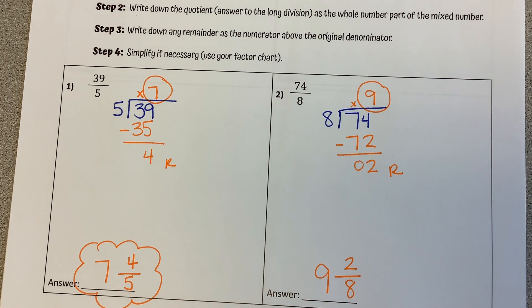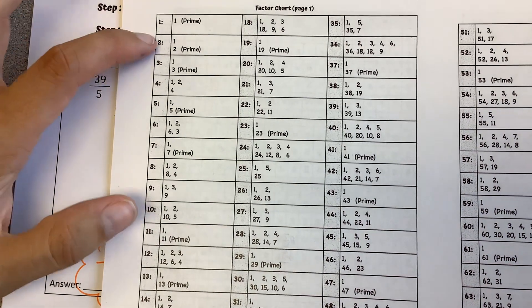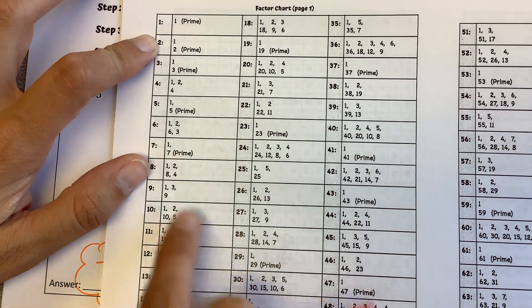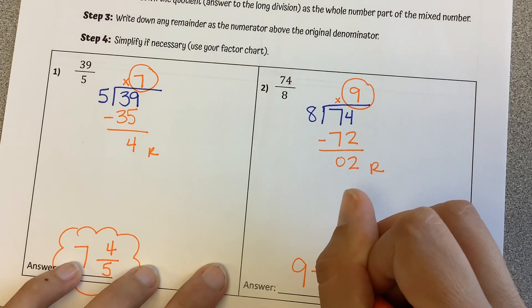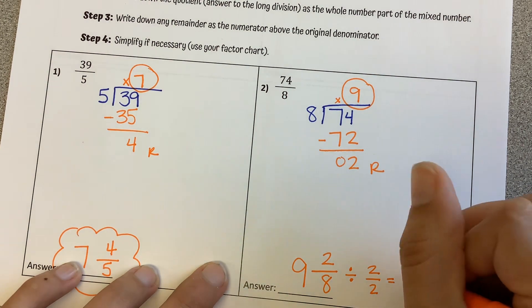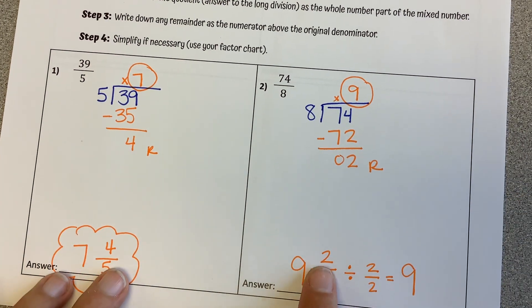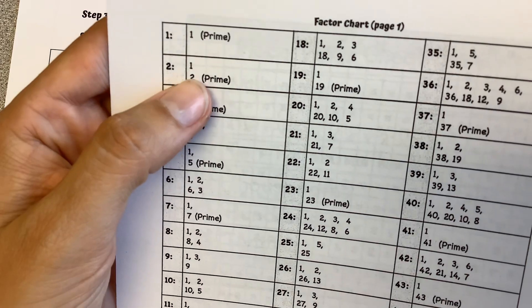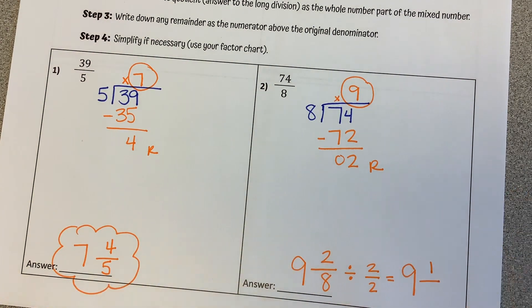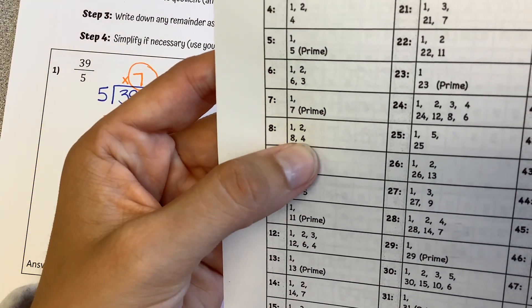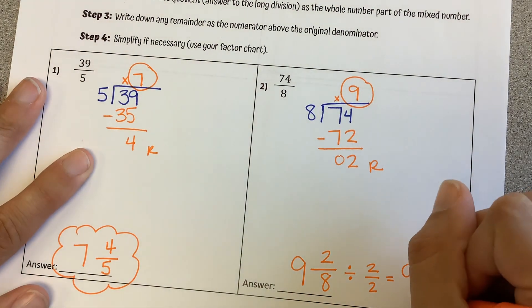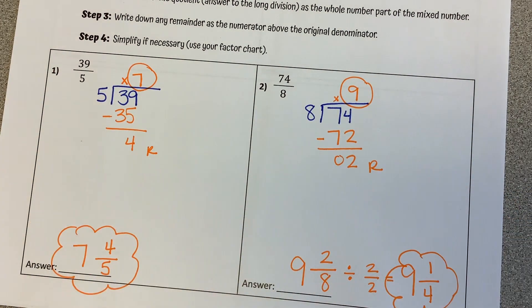So we technically have 9 and 2 8's. But what I'm going to double check is, using my factor chart, I'm going to see if 2 and 8 can simplify. So I'm looking at 2. I'm looking at 8. Do they divide by anything? Yes. They both divide by 2. So our whole number of 9 stays the same. Now I'm going to divide. 2 divided by 2. If you don't know that in your head, use your factor chart. 2 divided by 2 is 1. 8 divided by 2. If you don't know that in your head, go to your factor chart. 8 divided by 2 is 4. So our simplified number is 9 and 1 fourth.